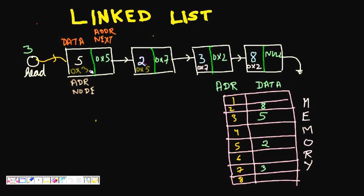Each node is basically a cell in memory — it has some address and stores some data. A node has two parts: the first is the data, and the second is the address of the next node. For example, the value 5 is stored in the first node, and its memory location is 0x3 in hexadecimal.